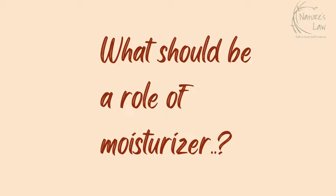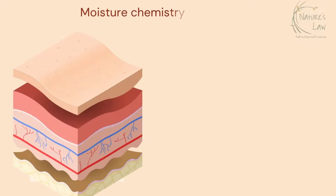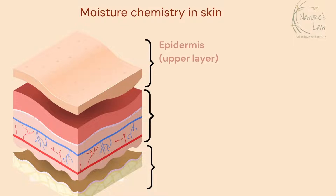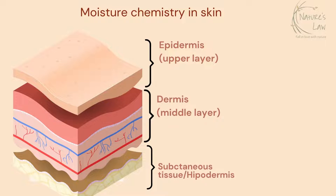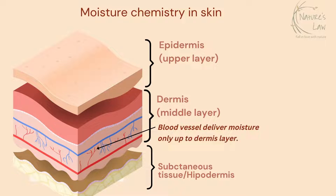What should be a rule of moisturizer? First, understand the moisture chemistry in skin. There are three layers of the skin. The upper layer is epidermis, the middle layer is dermis, and the third layer is hypodermis. Blood vessels can deliver moisture only up to the middle layer of the skin, that is the dermis.